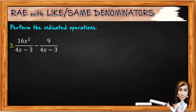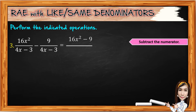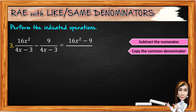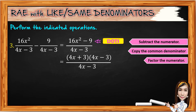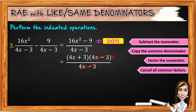For number 3, we have 16X squared over (4X minus 3) minus 9 over (4X minus 3). Subtract the numerators to get 16X squared minus 9, then copy the common denominator 4X minus 3. Factor the numerator — 16X squared minus 9 is a difference of two squares. The factors are (4X plus 3) times (4X minus 3). Copy 4X minus 3 in the denominator. Cancel the common binomial factor: (4X minus 3) divided by (4X minus 3) equals 1. Multiply the remaining. The final answer is 4X plus 3.